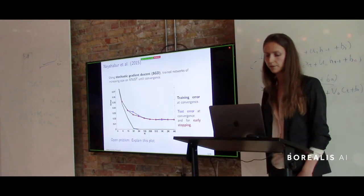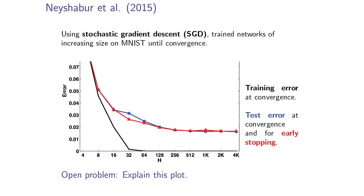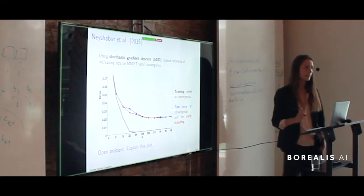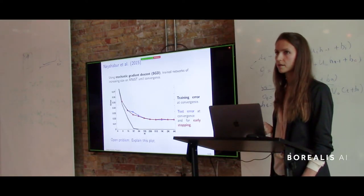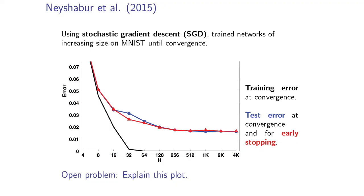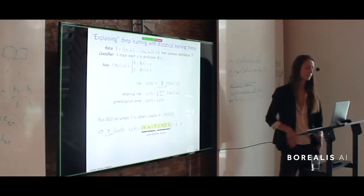Belkin et al., just three years ago, showed experimentally that that's not what happens in neural networks. They trained a network on the MNIST dataset using stochastic gradient descent, and showed that as you increase the size of the hidden layer, your training error goes down and approaches zero. And your test error also keeps going down — even when you got zero training error, test error still keeps going down. So we don't see that overfitting. There are a lot of researchers working on explaining this phenomenon, and it is considered to be still an open problem.